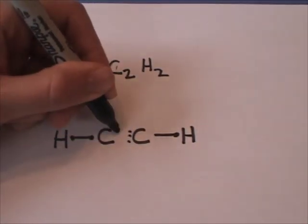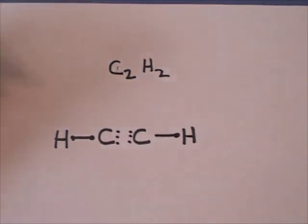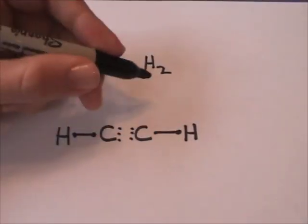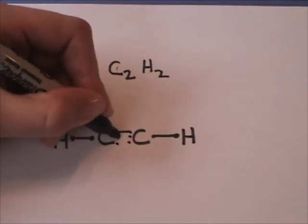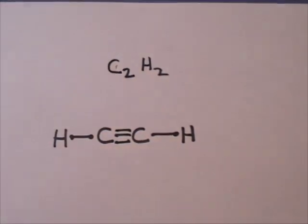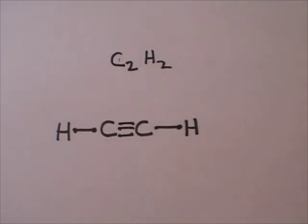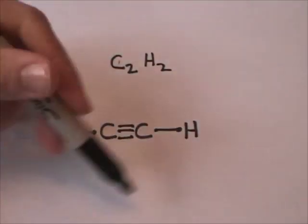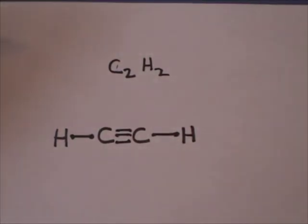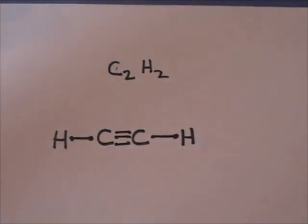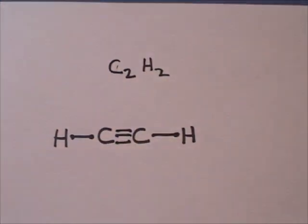This carbon has four valence electrons. This carbon has four valence electrons. So we can see that this carbon framework will be a triple bond, C2H2. And this is the correct Lewis structure for this acetylene, or C2H2 molecule.